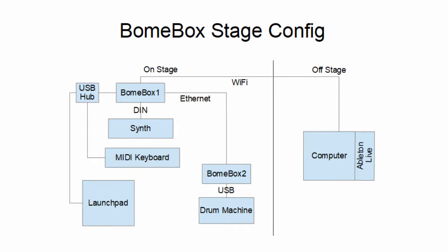In the Bonebox 1 we're going to connect the MIDI keyboard to a synth that's connected to the DIN of the Bonebox 1, and we're also going to have a launch pad over there so that the keyboard player can control Ableton Live from the launch pad. Finally, the keyboard player wants to be able to control a drum machine on the other side of the stage, so we're going to connect one Bonebox up to the other — Bonebox 2 — to allow the keyboard player to run the drum machine from his MIDI keyboard.